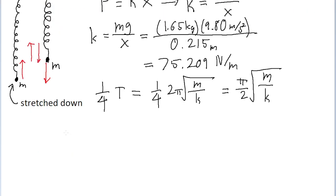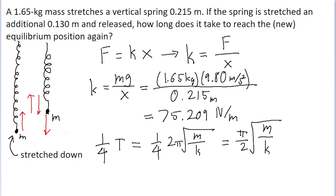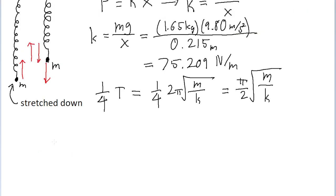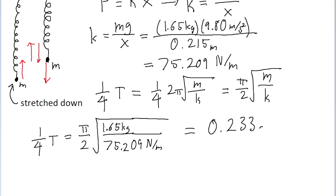And we already found the spring constant of the spring, and the mass of the bob is given to us in the problem. So we can solve this by plugging in the numbers into a calculator. So one-fourth of the period is equal to π divided by 2 multiplied by the square root of the mass of the bob, 1.65 kilograms, divided by the spring constant of about 75.209 newtons per meter. And if we put that into a calculator, then we find a time of about 0.233 seconds.